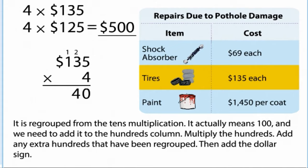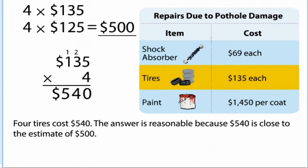It actually means 100 and we need to add it to the hundreds column. Multiply the hundreds. Add any extra hundreds that have been regrouped. Then add the dollar sign. Four tires cost $540. The answer is reasonable because $540 is close to the estimate of $500.